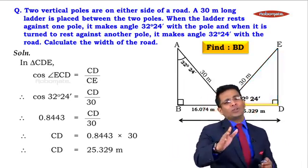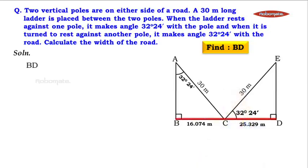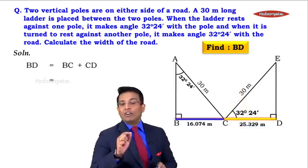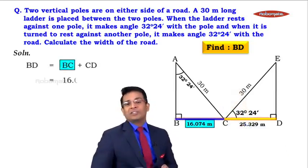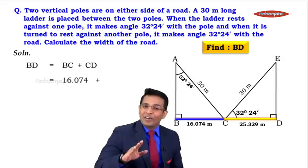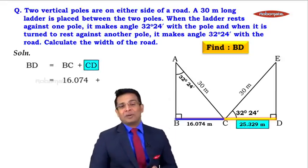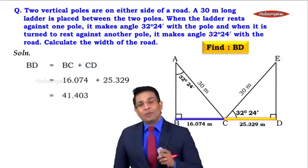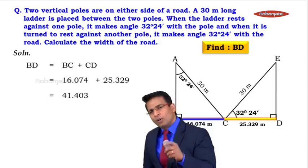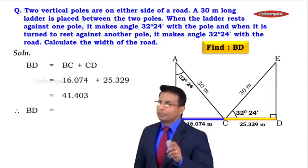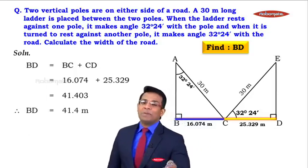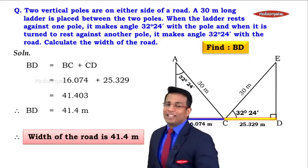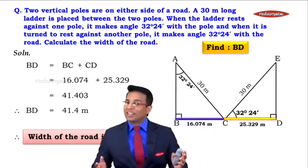Now it's easy to find BD. BD = BC + CD = 16.074 + 25.329 = 41.403 meters. Rounding off, BD ≈ 41.4 meters. The width of the road is 41.4 meters. A very important sum, but a very simple one.